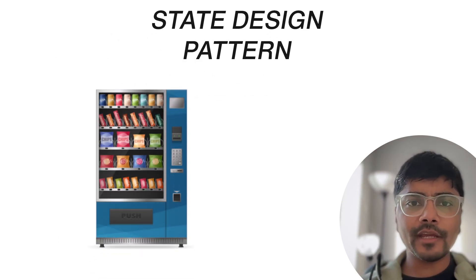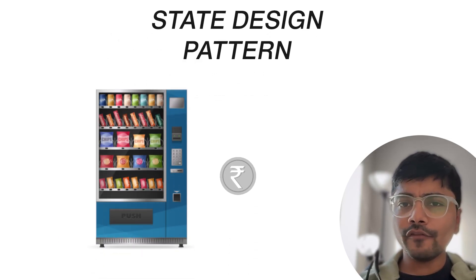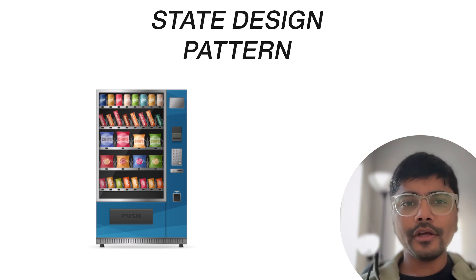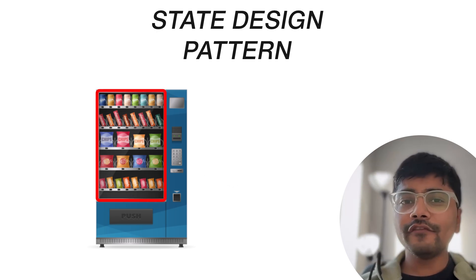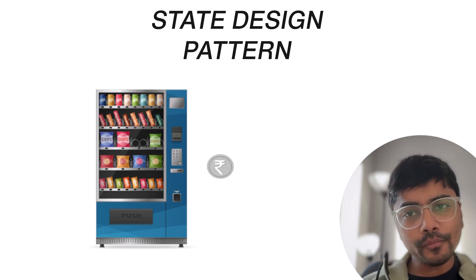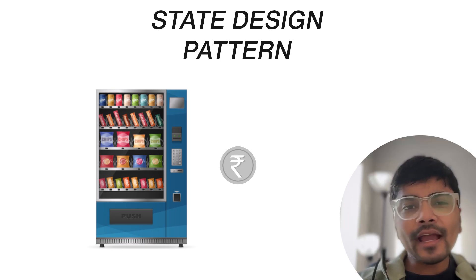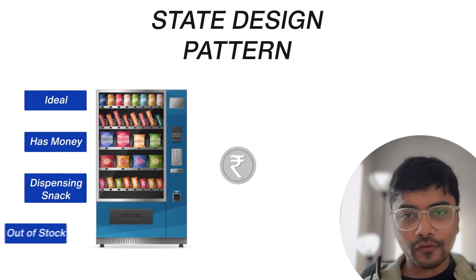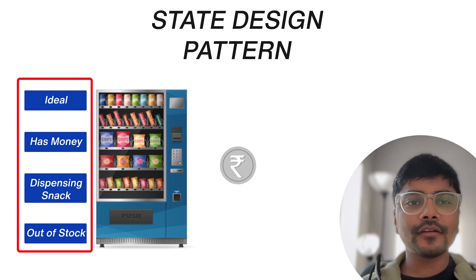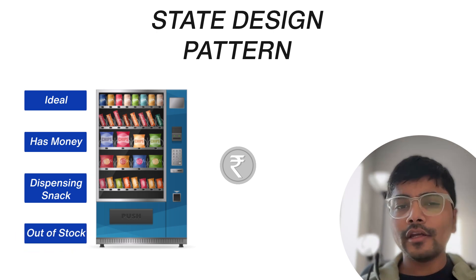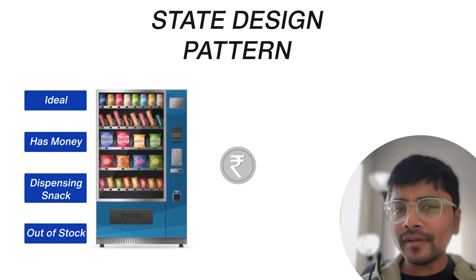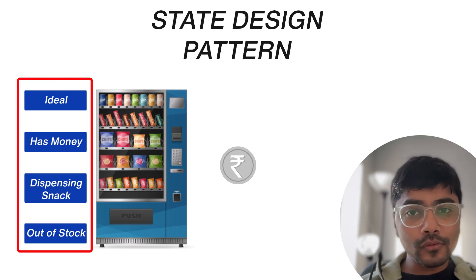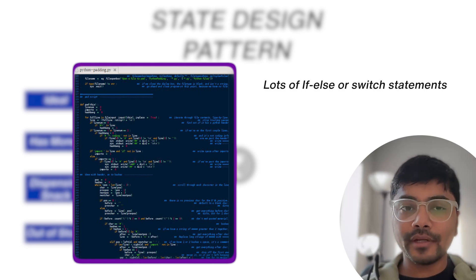Imagine a vending machine. When it's idle, it waits for you to insert a coin. Once you do, it allows you to select a snack. If the snack is out of stock, it refunds your money. The machine has multiple states: idle, has money, dispensing snack, or out of stock. Depending on its current state, the machine behaves differently.